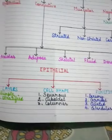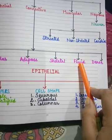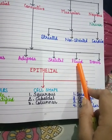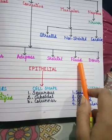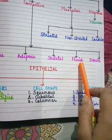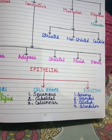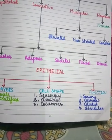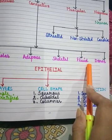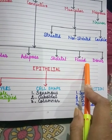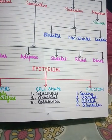Next is fluid connective tissue, which includes blood and lymph. Blood is the liquid part that flows in the blood vessels and consists of plasma and the cellular part — RBC, WBC, and blood platelets. Lymph is the fluid surrounding the body cells; it is essentially blood plasma that has oozed out of the blood vessels. Lymph contains WBC but does not contain RBC.